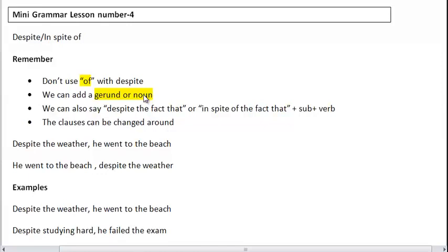If you want to add the noun to the beginning of the sentence or introduce the subject of the sentence, you need to use despite the fact that. So we can say despite the fact that he studied hard, or in spite of the fact that he studied hard.